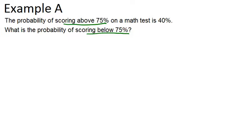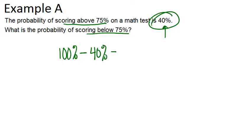If the probability of scoring above 75% is 40%, then the probability of scoring below 75% — or possibly including 75% — would be 60%. The reason is, if it's one or the other, the two probabilities have to add up to 100%. So the probability of below is 100% minus 40%, which is 60%. That's an important thing to remember in binomial distribution situations: it's either one or the other, and the two probabilities have to add up to 100%.